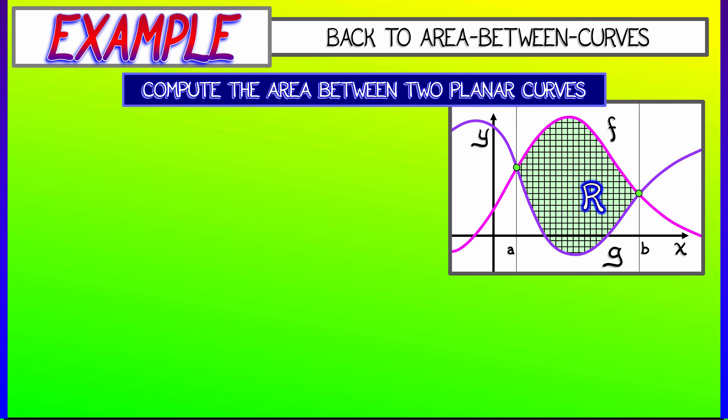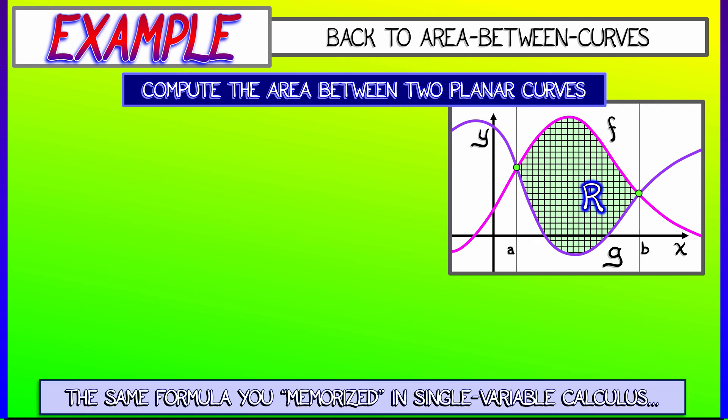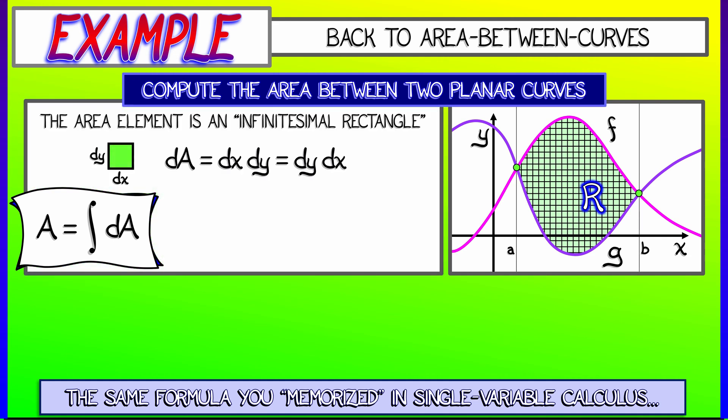So instead of doing things the way that we did it back in single variable calculus, let's think of the area A as the integral of the area element dA, where now dA is not a vertical strip, but rather the rectangle with dimensions dx and dy.